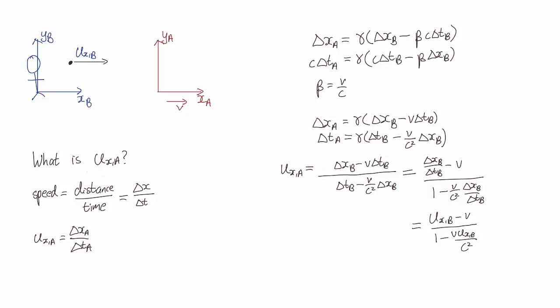Now let's have a check if this is correct. What happens in everyday life if the velocities involved are much smaller than c? Well, in this case, the denominator reduces to 1 and we have u_x,b minus v,